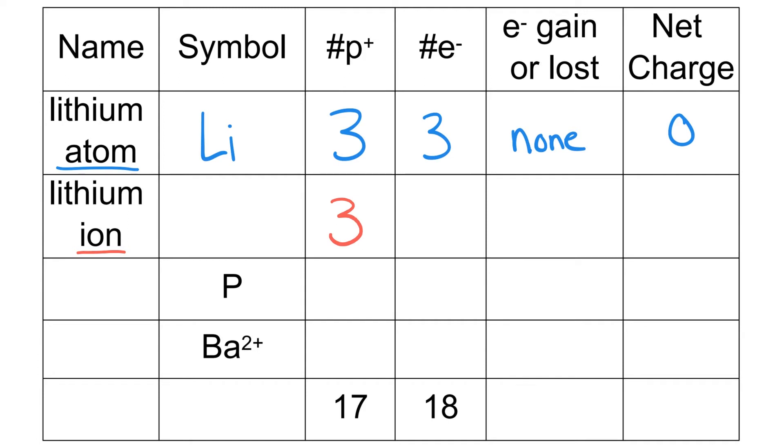With the lithium ion, we started with 3 protons. We can see it's going to want to lose one electron, so we have one less electron, which will be 2. We have the electrons gained or lost: we have lost 1 electron. That gives it a 1+ charge, and when we draw our symbol, the ionic symbol is Li with a 1+ or just a simple plus sign.